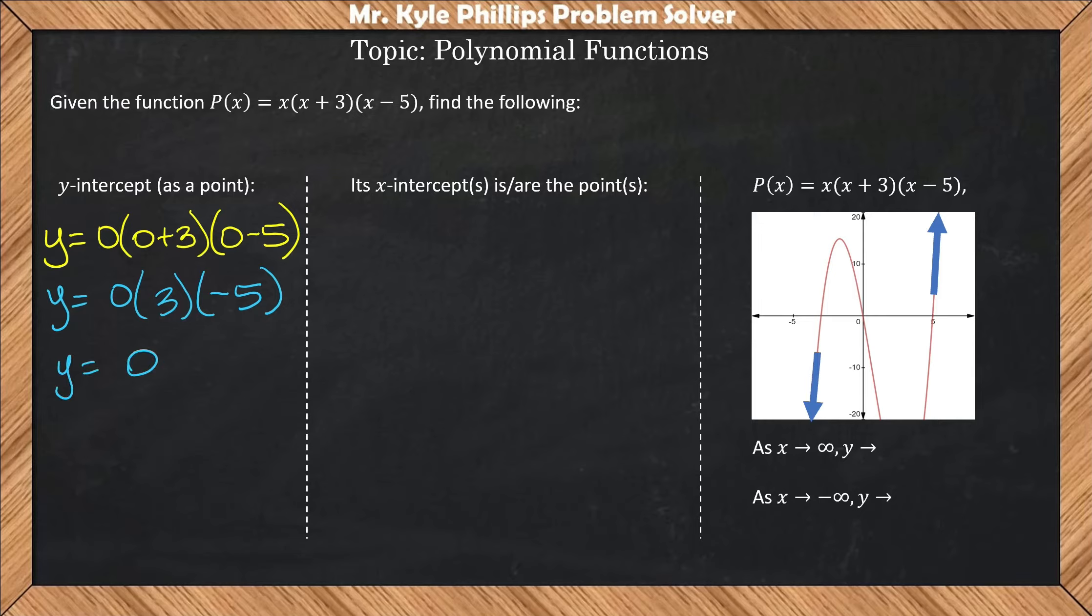So we want this as a point. So here, when x is 0, the y value is also 0. That means that the y-intercept here is going to be at the origin, which we can see from our graph here.